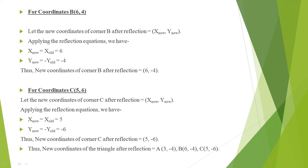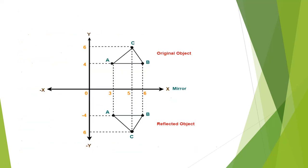Similarly, for vertex B the original coordinate gives new coordinates (6, -4). For vertex C, x-new equals 5 and y-new equals minus 6. So the new coordinates for the triangle after reflection are: A(3, -4), B(6, -4), and C(5, -6).